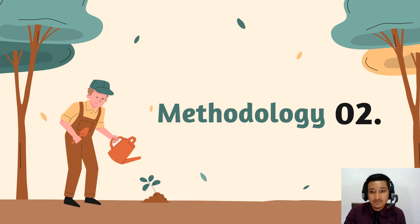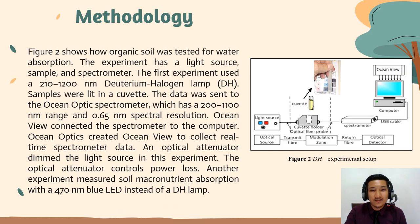For the methodology, Figure 2 shows how organic soil will be tested for water production. The experiment has a light source, sample, and spectrometer. The first experiment used a 210 to 1200 nm deuterium-halogen lamp. The sample was led to a cuvette. The data was sent to the Ocean Optics spectrometer, which has a 200 to 1100 nm range and 0.65 nm spectral resolution. OceanView software connected the spectrometer to the computer to collect real-time spectrometer data.